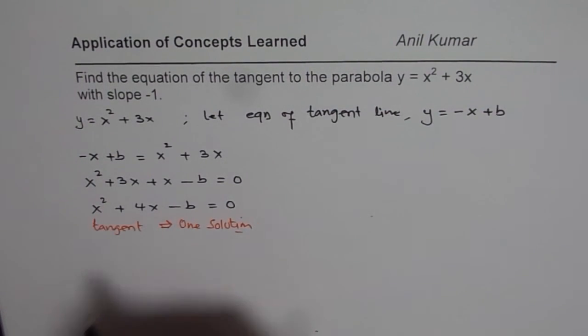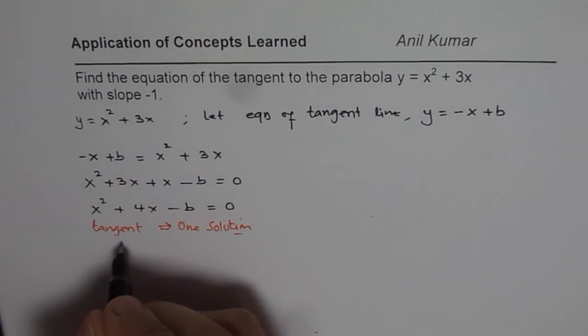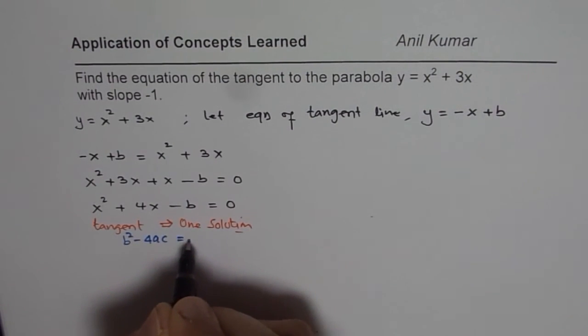So, how do you get one solution for a quadratic equation? You get one solution for a quadratic equation, in general, if b square minus 4ac is equal to 0, right?